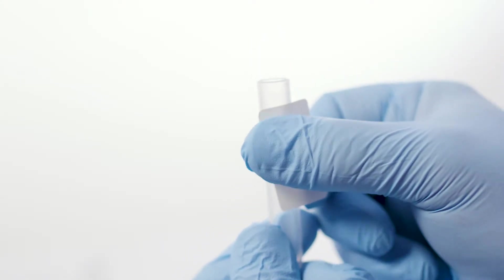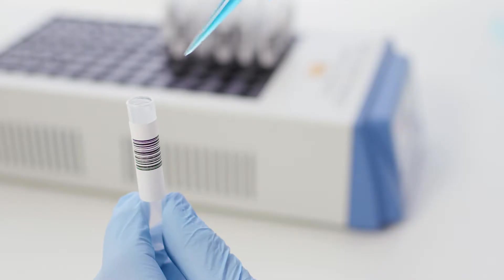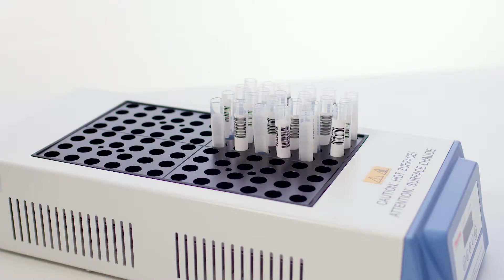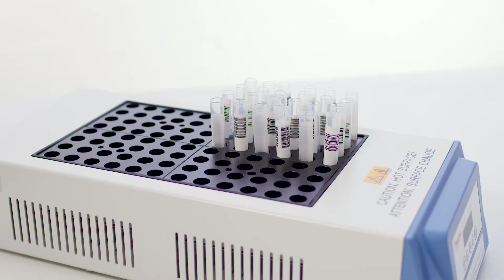Following this single enrichment, one milliliter of the broth is added into barcode labeled Solus boiling tubes. The Solus boiling tubes are then heated in a heating block for 15 minutes at 85 degrees C and placed into a rack ready for the DS2 automation.